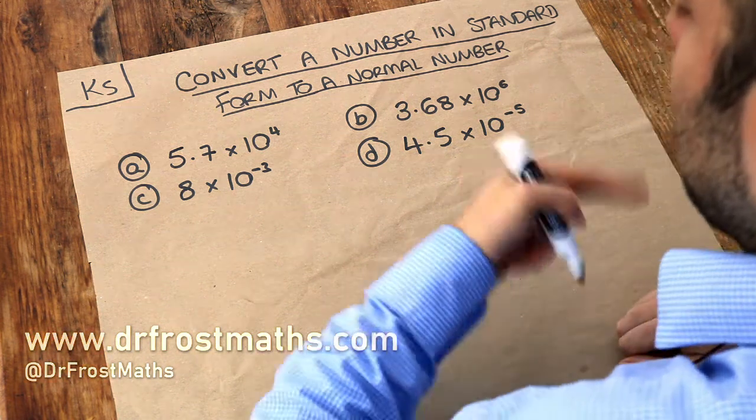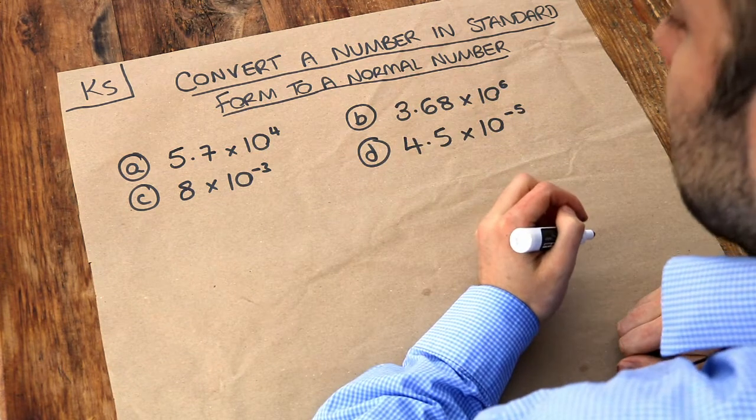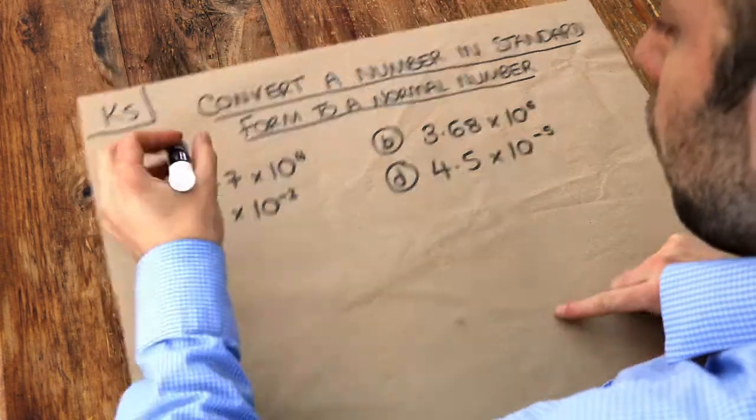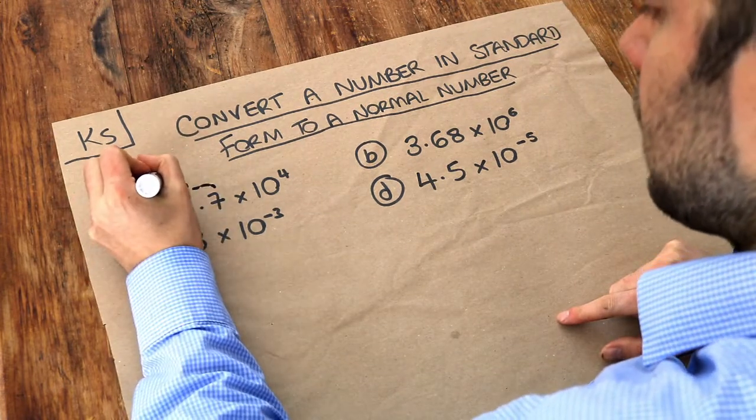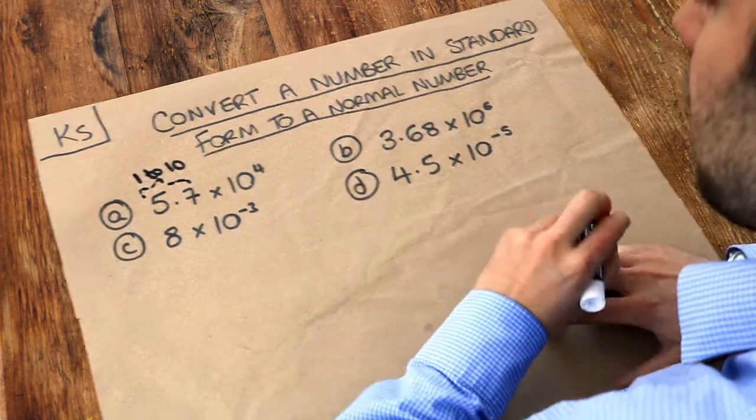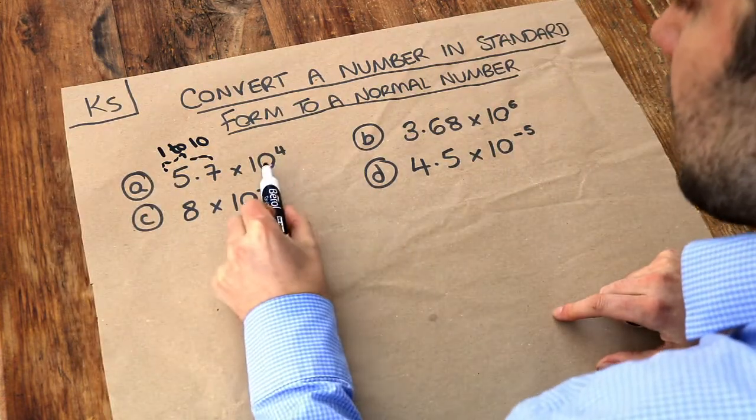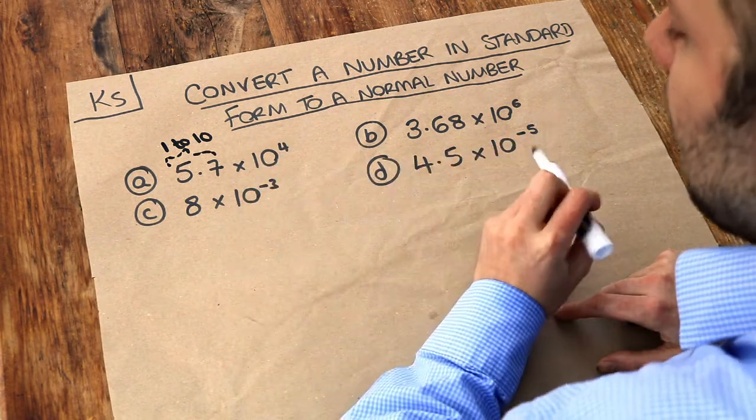In the previous video we explored what standard form was and how to convert from a normal number into standard form. Remember in standard form, this first number here is a number between 1 and 10, excluding 10 itself, so it's 1 to 9.9 recurring if you like. And then this thing after it here is times by 10 to the power of some number.